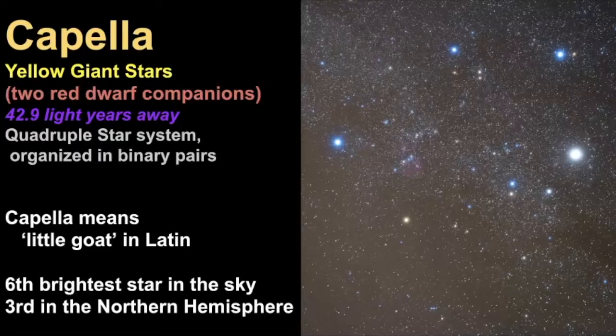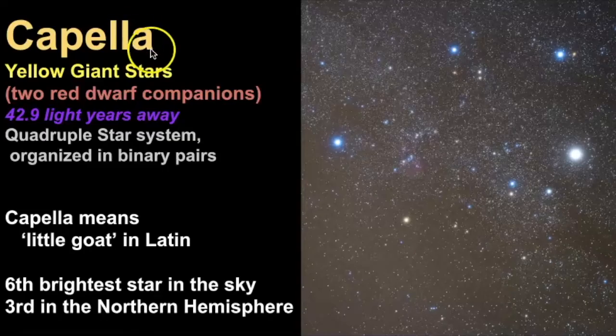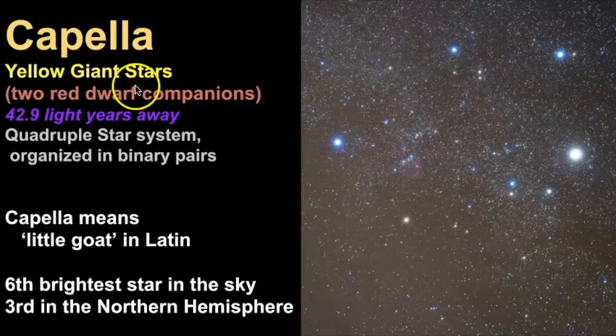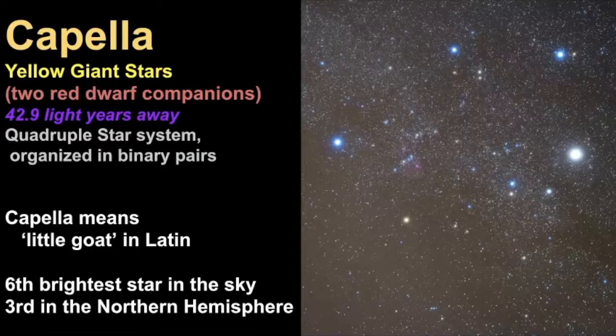Even though Capella appears to be a single star to the naked eye, it's actually a quadruple system that is made up of two binary pairs including two yellow giant stars and two red dwarf companions. Capella is estimated to be 42.9 light years away and the name Capella means little goat in Latin. It's the sixth brightest star in the night sky, however it's the third brightest in the northern hemisphere.